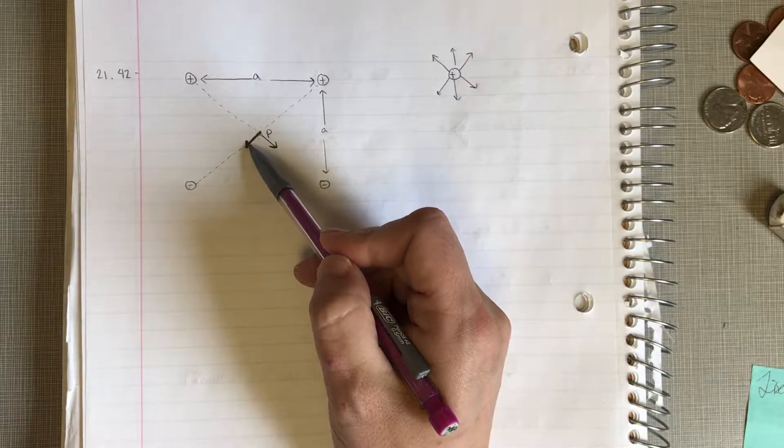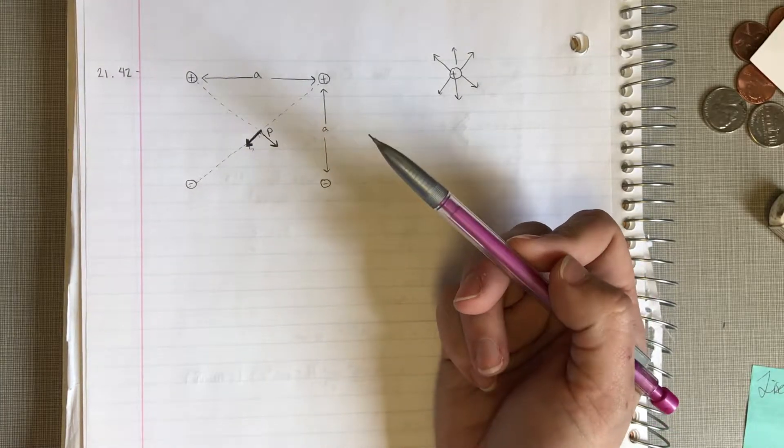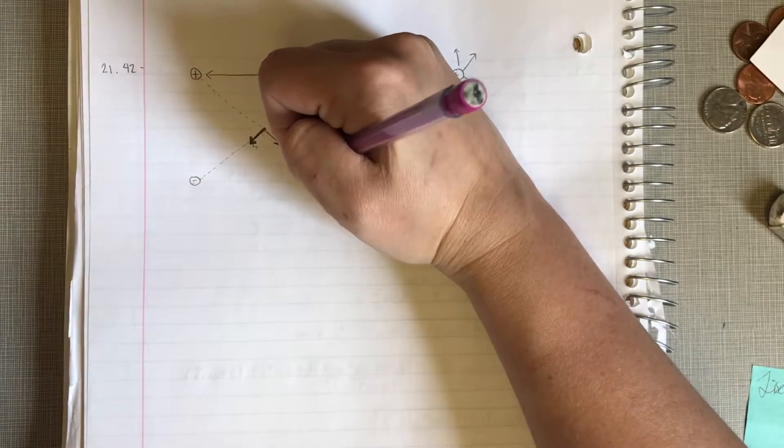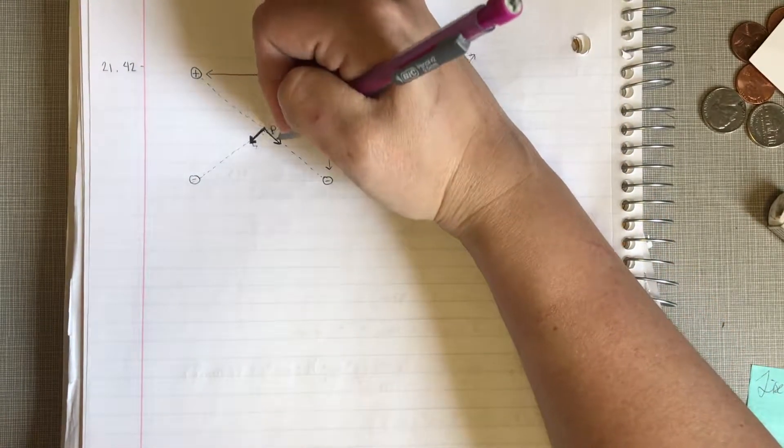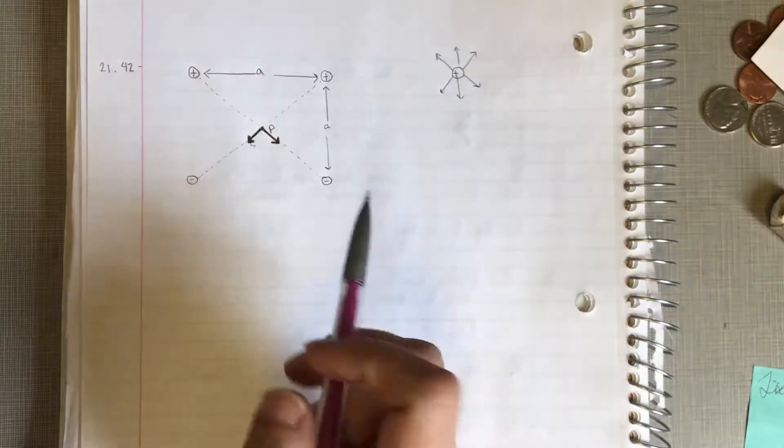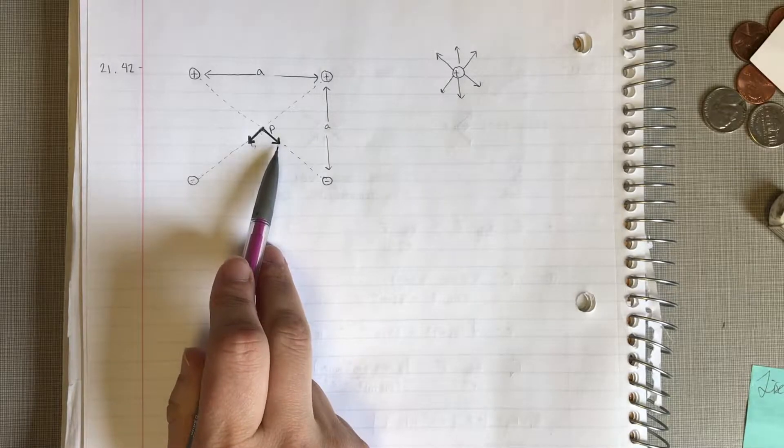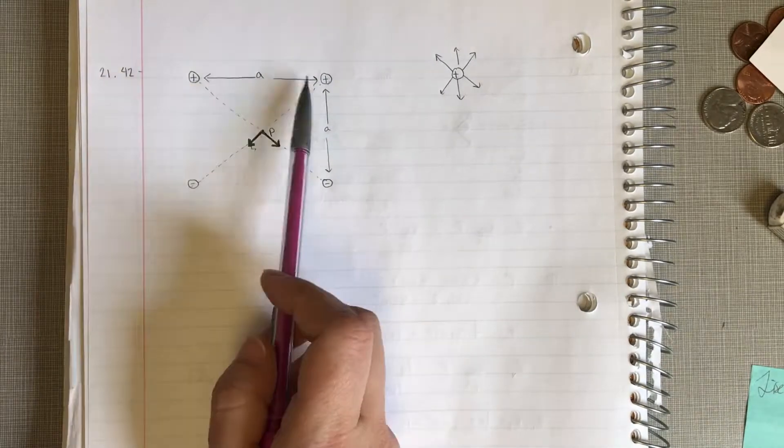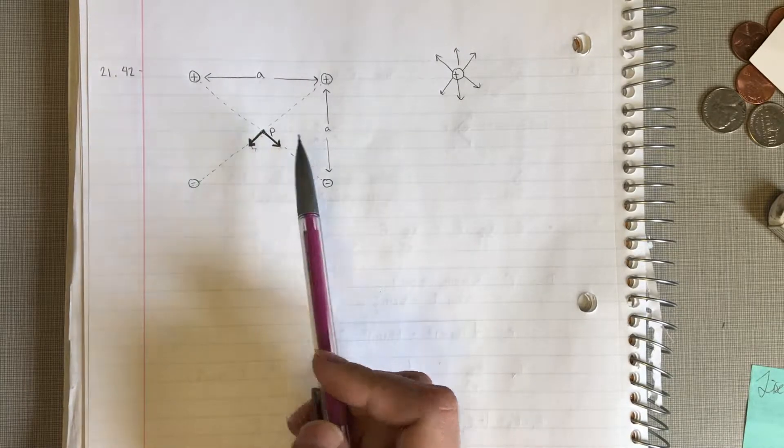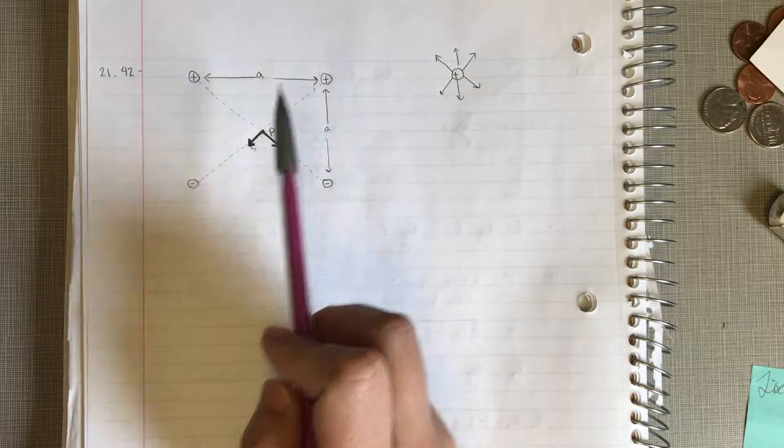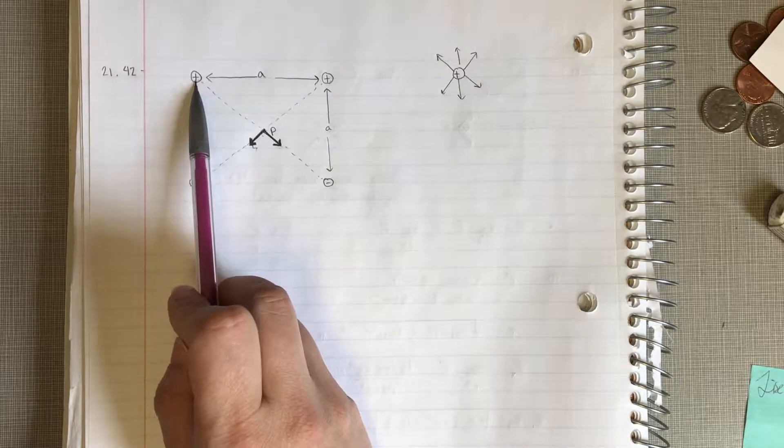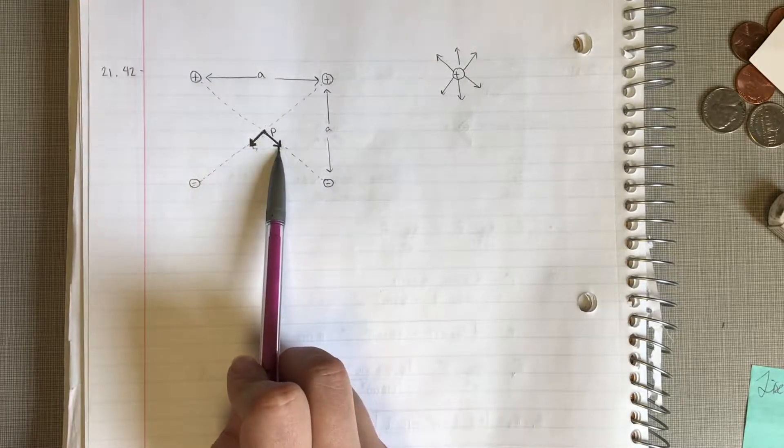Same with this guy over here. If we draw our little distance over and point radially inward towards that charge, it's also going to double up this one. So, in reality, what we're looking at, we have four charges that are contributing to this, but only two fields. Because this charge and this charge make this one extra strong. And this one and this one make this one extra strong.